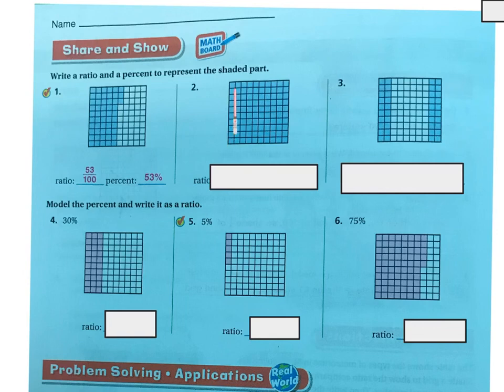And looking at the next one, they're all shaded. And there's 100 here, because it's 10 by 10. So that's an easy one. That's going to be 100 out of 100 or 100%.